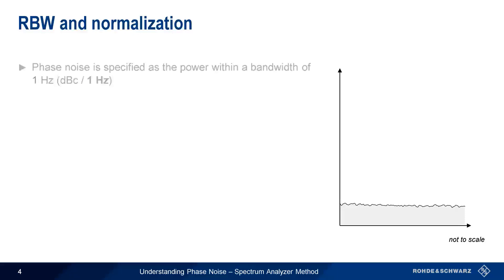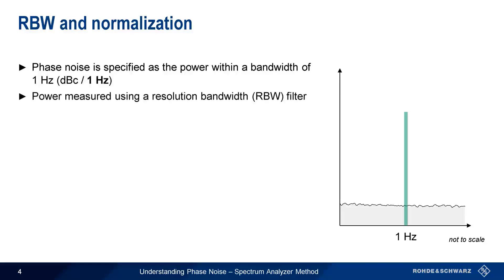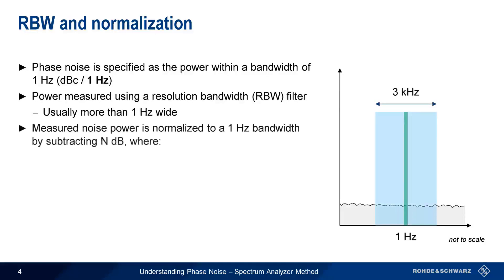Recall that phase noise is specified as the noise power contained within a bandwidth of 1 Hz. Spectrum analyzers measure power using a resolution bandwidth filter, and this filter is usually more than 1 Hz wide. Therefore, noise power has to be normalized to a 1 Hz bandwidth. This is done by reducing the measured noise power value by N dB, where N equals 10 log of the resolution bandwidth in Hz.